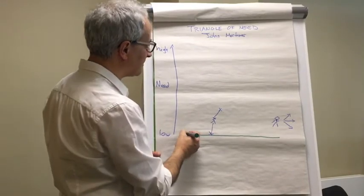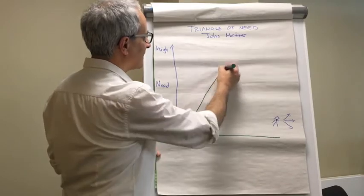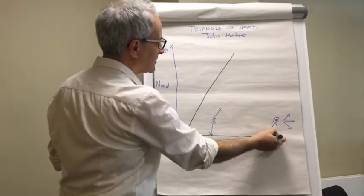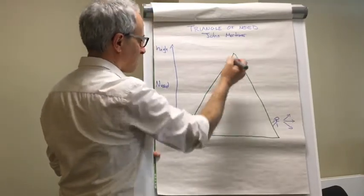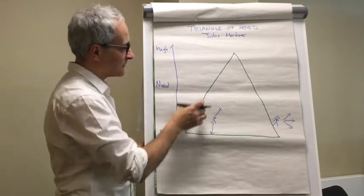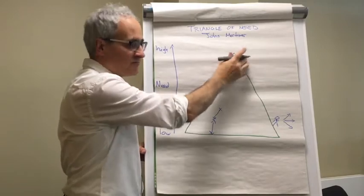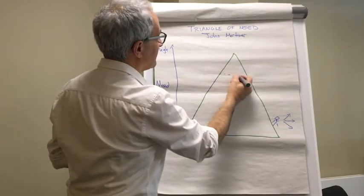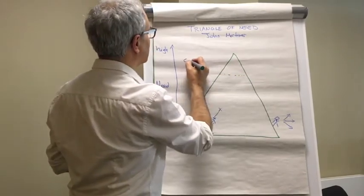And in terms of numbers of people, if you could track that, that looks like a triangle. The most people are here, some people are here, some people are here, and there's a small few that are in critical situation.